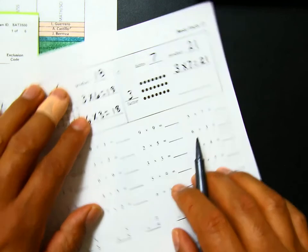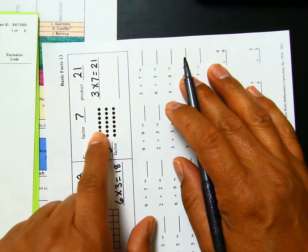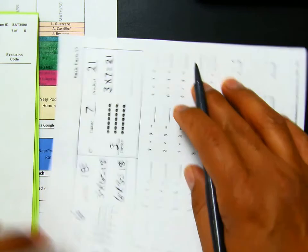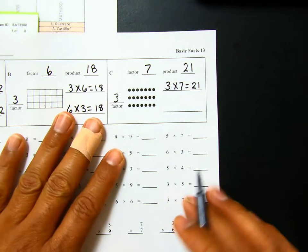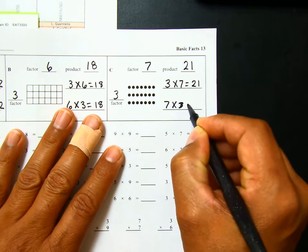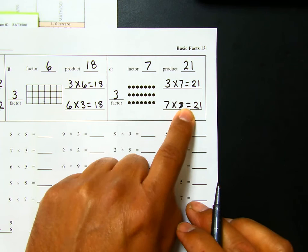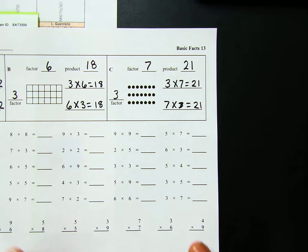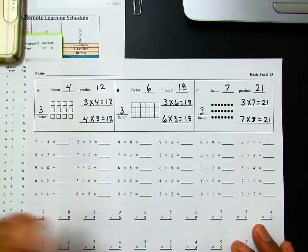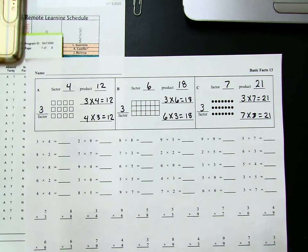I can also turn my array sideways. Now I have seven rows with three in each row. So I could also write it as seven rows of three equals twenty-one — seven times three equals twenty-one. And now you do work on the rest of this sheet on your own.